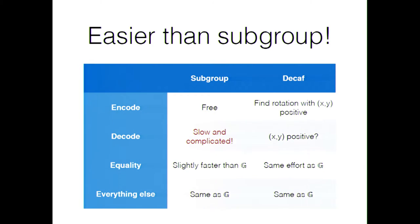So that's how you can implement an Edwards curve as a prime-order group using a quotient group rather than a subgroup — with less code and more easily. You have to do an extra operation when you encode the point, but you get to avoid the slow and complicated subgroup membership check when you decode, replacing it with a much simpler check. The equality check is about the same effort as in G, and everything else is the same.